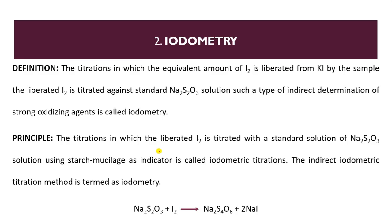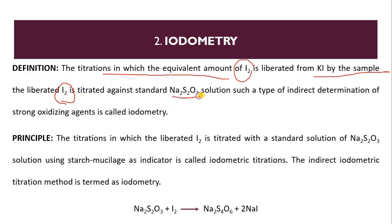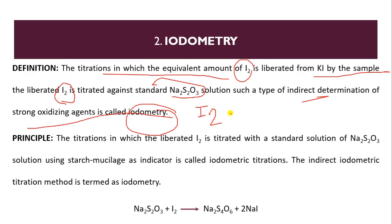The second method is iodometry titration. In iodometry, an equivalent amount of I₂ is liberated from potassium iodide by the sample, and the liberated I₂ is then titrated with a standard sodium thiosulphate solution. This is used for the determination of strong oxidizing agents. Here we are using liberated iodide — not iodine directly — and it acts as a reducing agent.